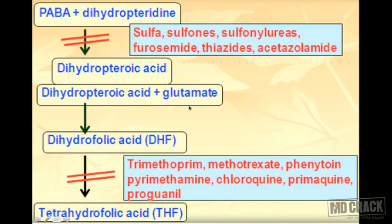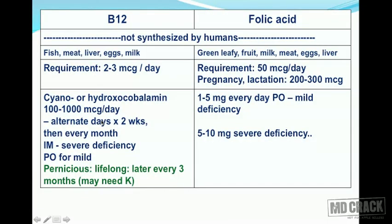Now we compare B12 and folic acid. Neither is synthesized by humans. B12 is present abundantly in fish, meat, liver, eggs, and milk. Most of these are non-vegetarian sources — only milk is available to vegetarians — so B12 deficiency is common in pure vegetarians.